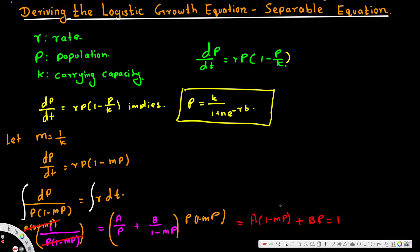Now we equate p equal to 0. Substituting p equal to 0, we get 1 equals A times 1, and the B·p term becomes 0. So from this we get A is equal to 1.